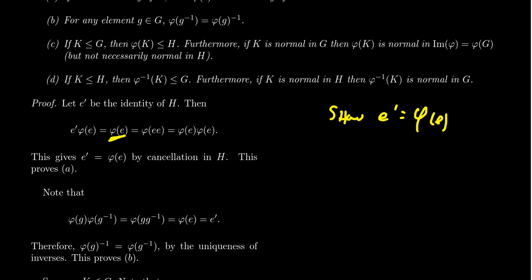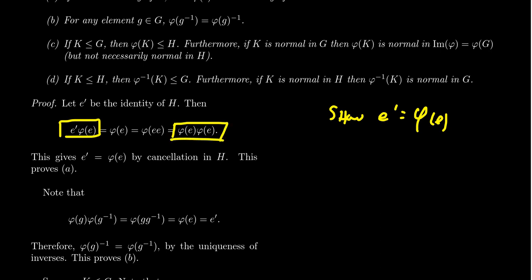Start with the element phi of E. Since it belongs to H, we can multiply it by the identity E prime to get E prime times phi of E, which equals phi of E. On the other hand, since E is the identity of G, E equals E squared, so phi of E equals phi of E times E, which by the homomorphic property becomes phi of E times phi of E. Comparing the two statements — E prime times phi of E equals phi of E times phi of E — we can cancel on the right in the group to get E prime equals phi of E.